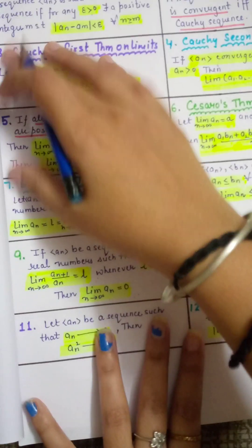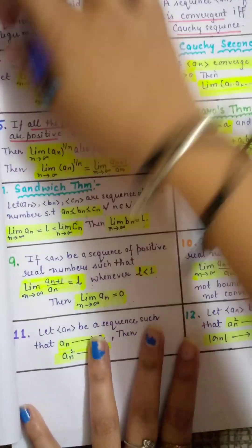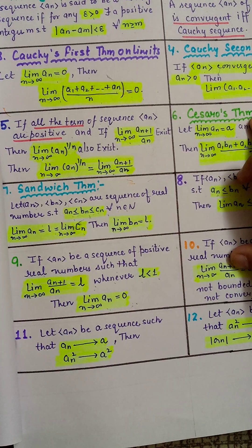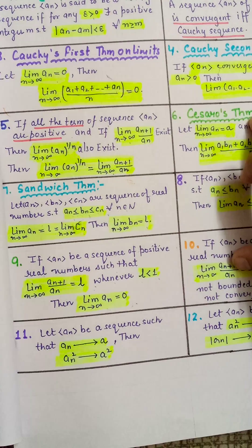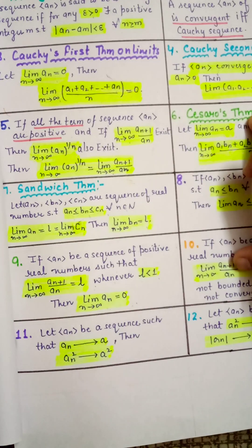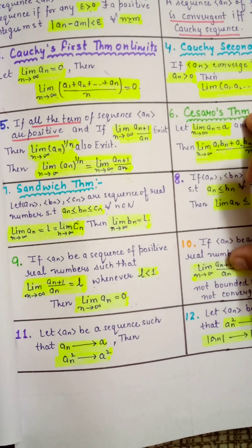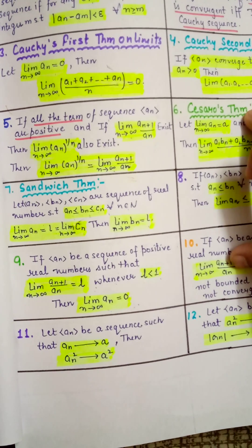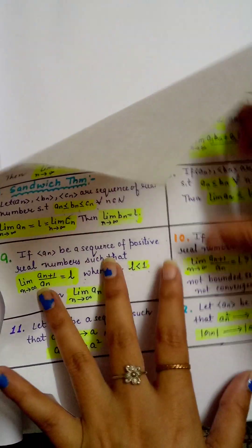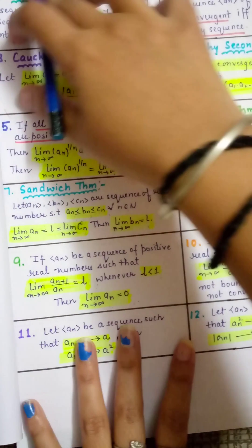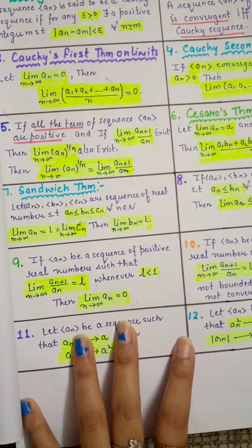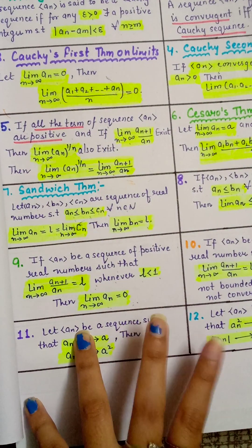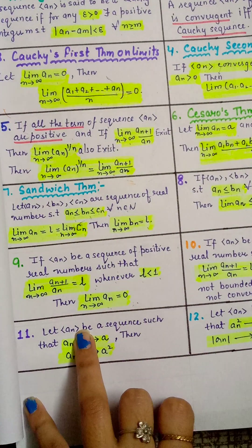These are our 12 important results of sequences, which we use in the NET and GATE exams. This was a short video for revision. If it is helpful for you, please like, comment, and subscribe to my channel. Thank you so much.